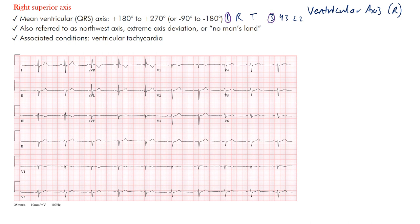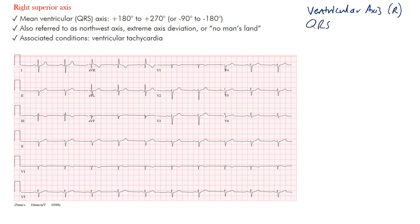Those numbers refer to the P-wave axis at 3 degrees, the R-wave axis at 43 degrees, and the T-wave axis at 22 degrees. In these lectures we focus on the R-wave axis — the QRS axis — which in that example of 43 degrees would be normal. This is the QRS axis in the frontal plane.